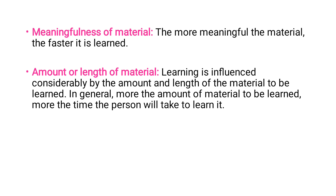Meaningfulness of material: whatever is being learned should have some meaning. If the content is not clear — if it is vague or unclear — then learning will not be faster. Next is amount or length of material. Learning is influenced considerably by the amount and length of material to be learned. More material requires more time to learn. For example, nursing is learned in four years and medicine in five to five and a half years because there is so much to learn. Depending on the amount of learning material, the time will also be extended.